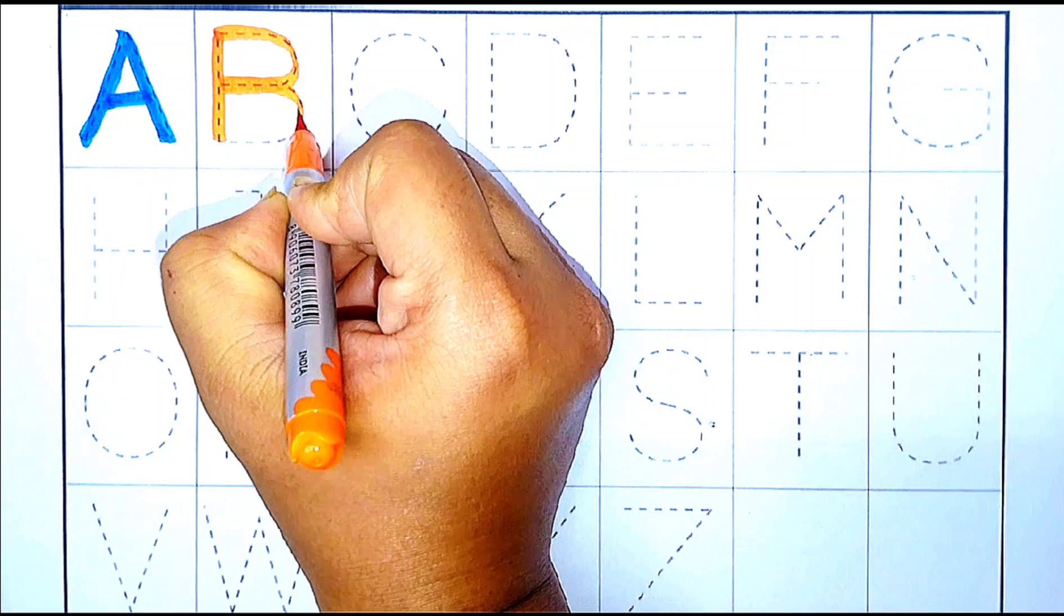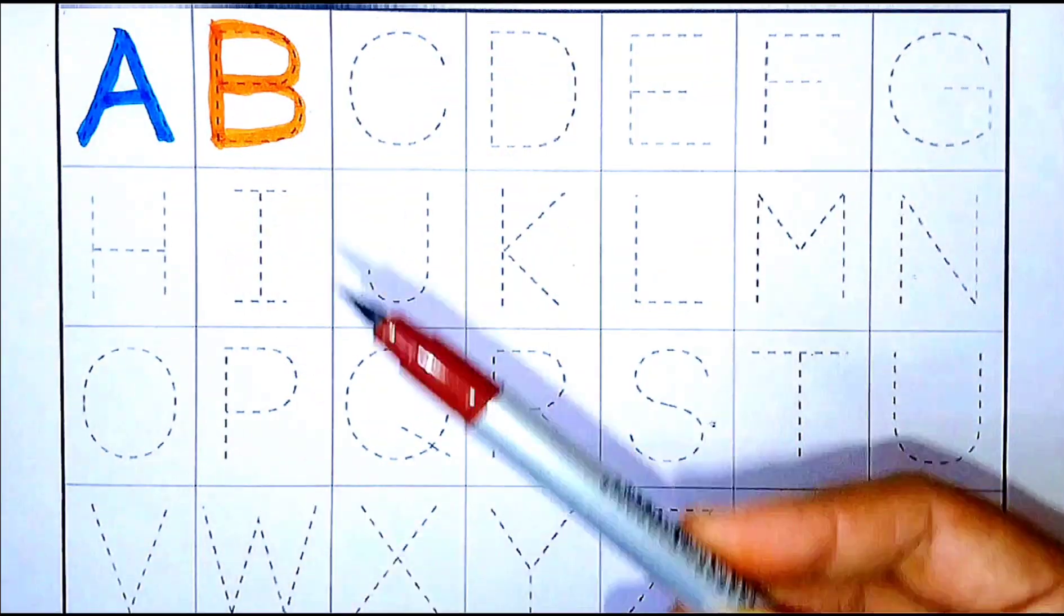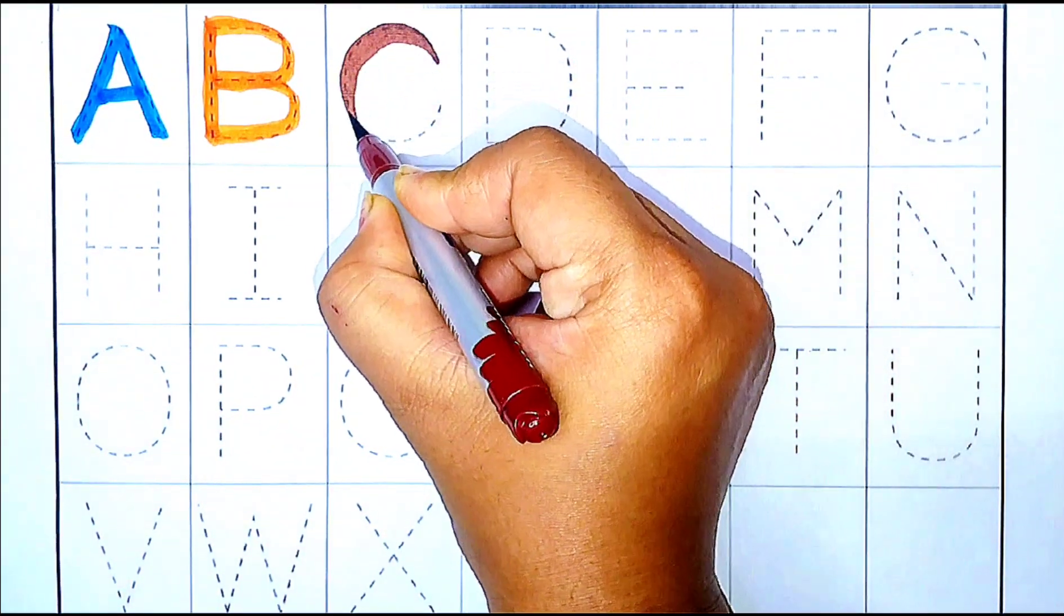B, B for bat. Brown color. C, C for cow.